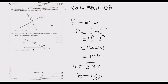Now that BC equals 12 cm, we can use cosine. Angle ACB: cosine of ACB equals the adjacent over the hypotenuse. The adjacent to angle ACB is BC = 12, and the hypotenuse is AC = 13. So cos(ACB) equals 12 over 13.